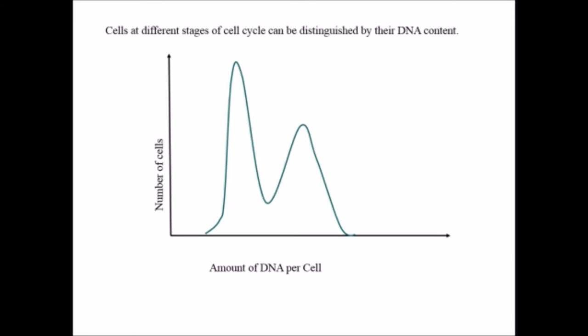Cells at different stages of cell cycle can be distinguished by their DNA content. When we plot a graph between the number of cells and amount of DNA per cell during the cell cycle, then we will come to know that in case of G1 state, the cells have diploid number of chromosomes.